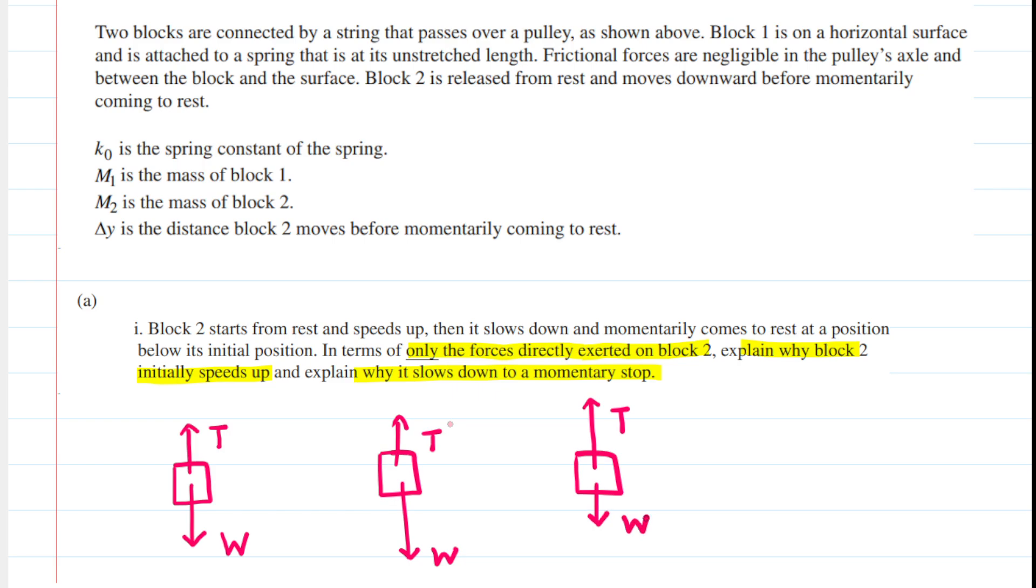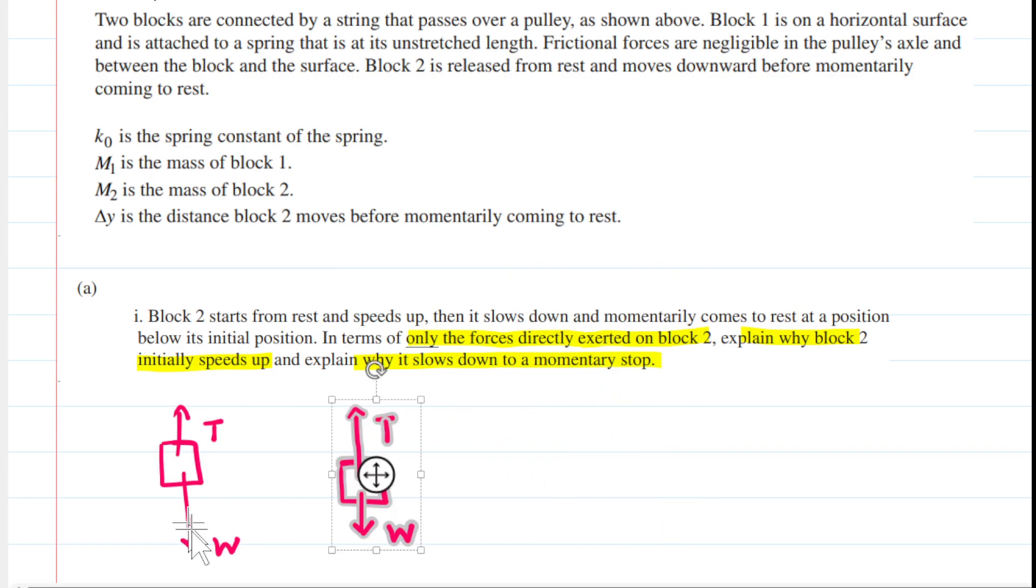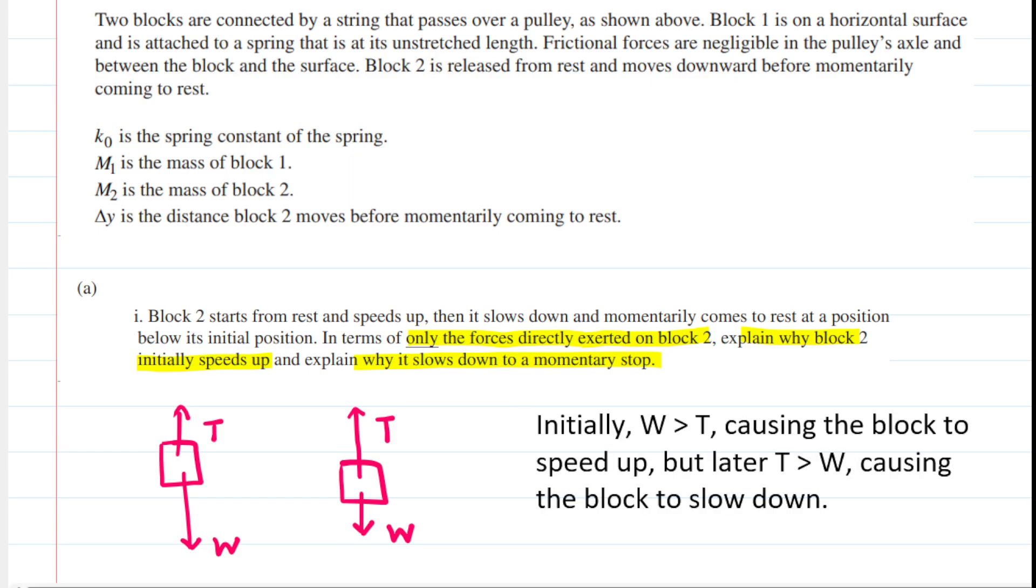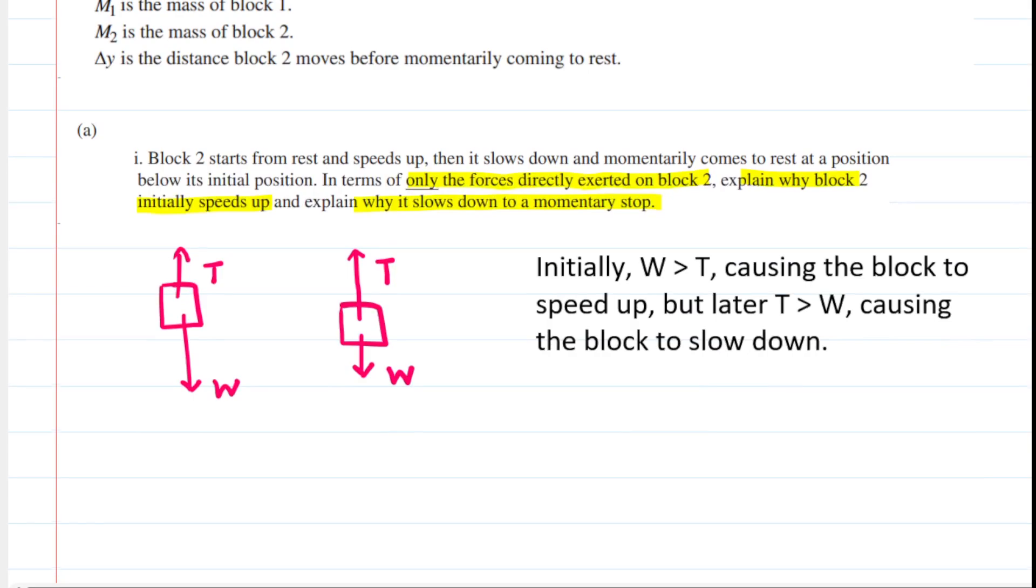So these are the concepts that we want to use in order to answer this question. So, to summarize, at first, the weight or the gravitational force is greater in magnitude, causing the block to speed up. But then later on, the tension becomes larger in magnitude, causing it to slow down. So let's write those thoughts down just to summarize them. If you'd like, you can pause the video and reread that statement one more time.